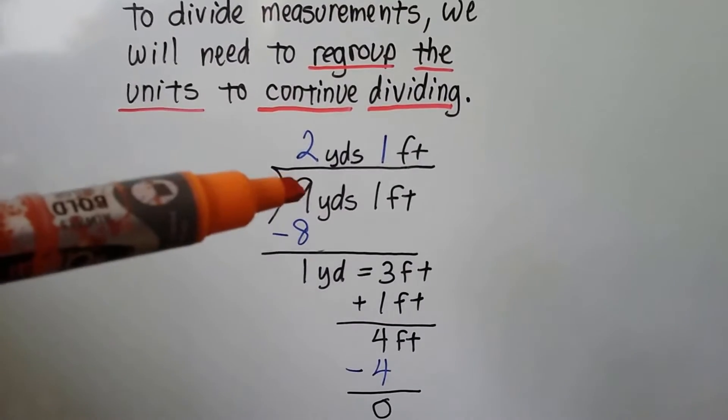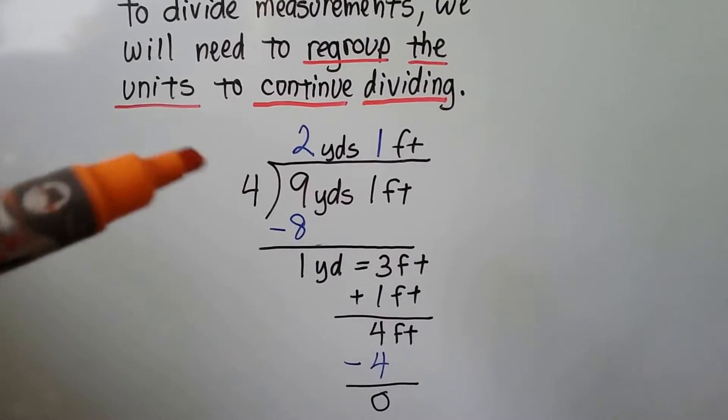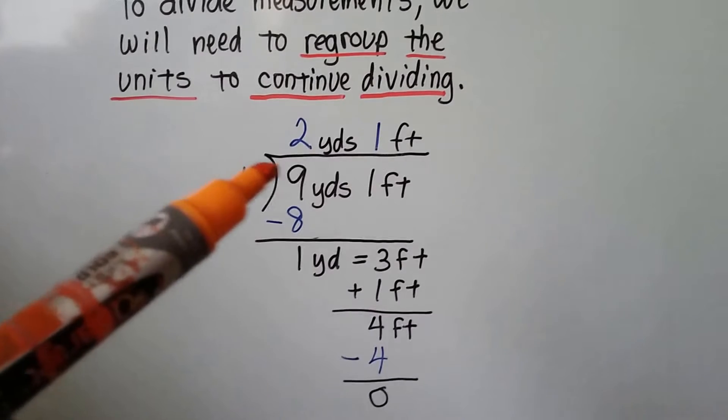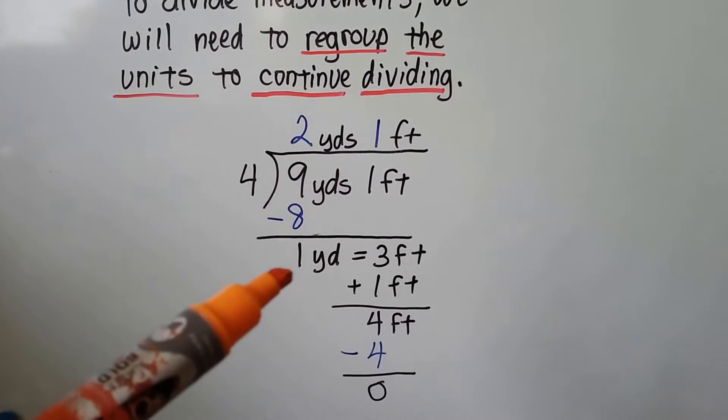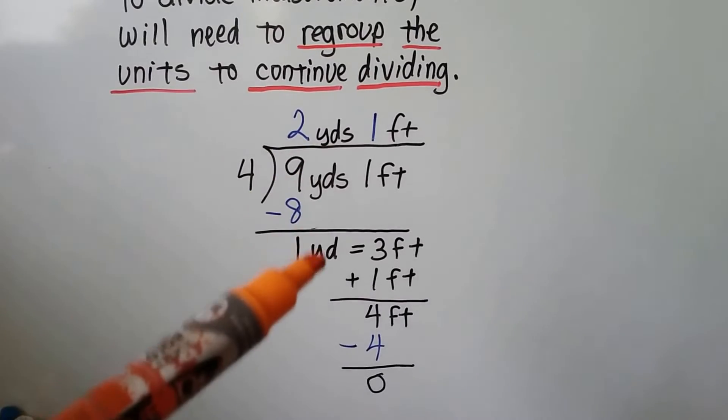So if we have 9 yards and 1 foot divided by 4, we ask ourselves how many times can 4 fit into 9? 2 times. 4 times 2 is 8. We do our subtraction and get 1. That's 1 yard.